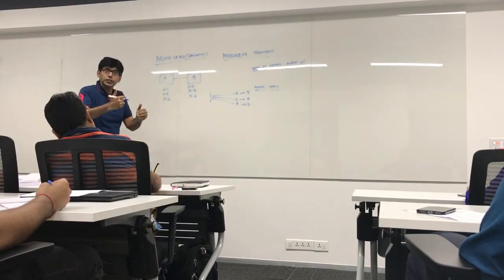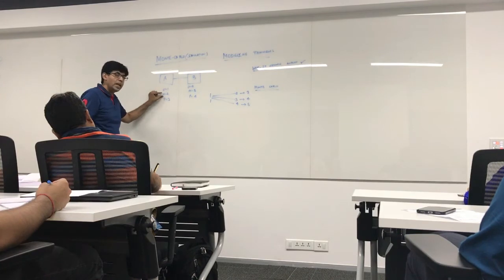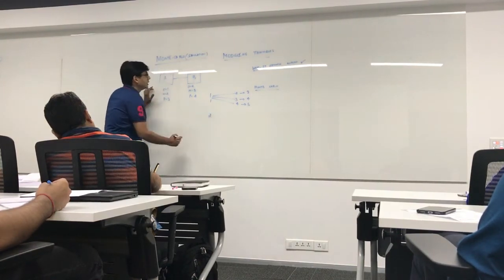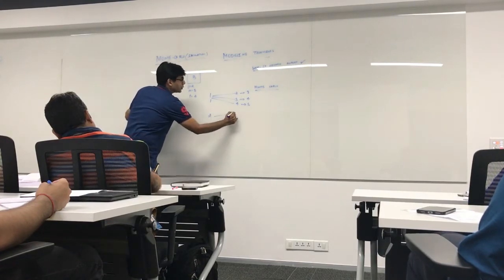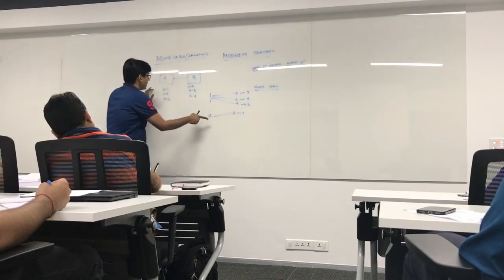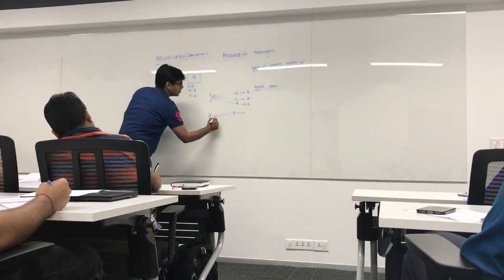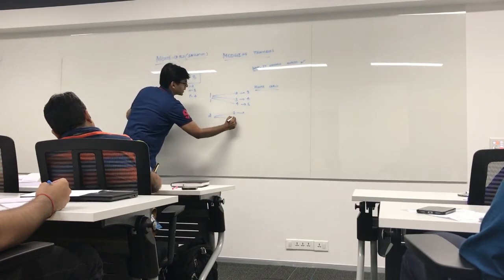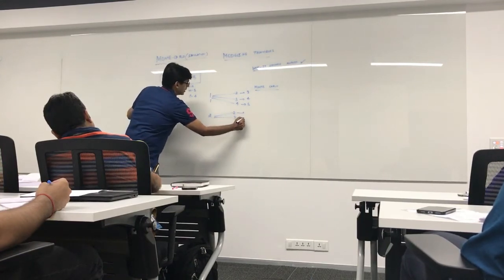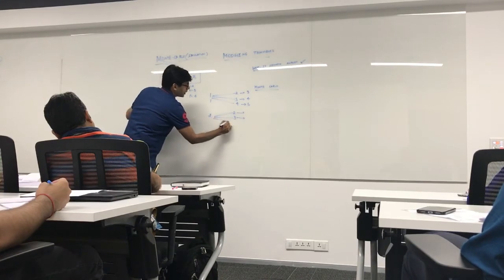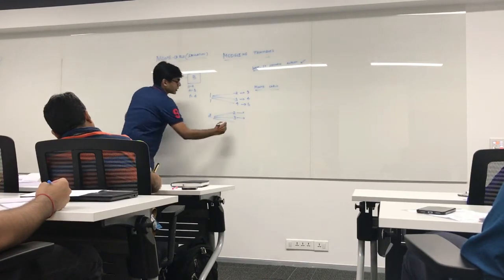So, another combination could have been A getting completed in most likely which is 2 days. B in optimistic again 2 days. A again in most likely B in 3 days which is most likely A again optimistic and B in pessimistic which is 4.